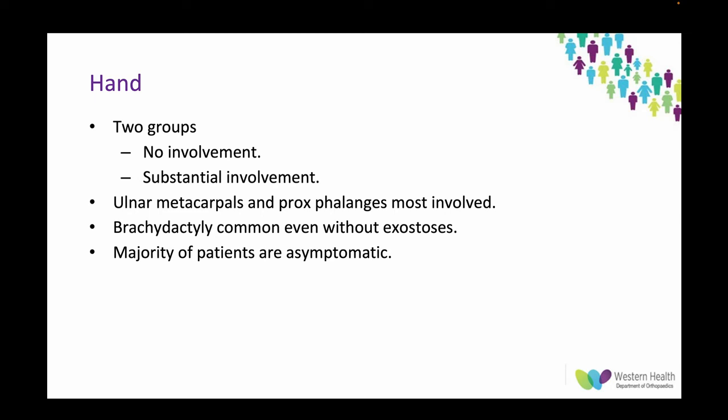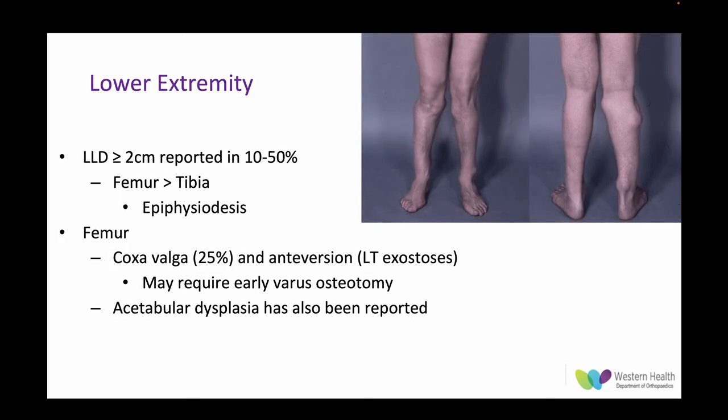In the hand, ulnar metacarpals and proximal phalanges tend to be involved, usually asymptomatic. Brachydactyly is common even without exostosis on x-ray. For the lower extremity, a limb length discrepancy of more than 2 cm is reported in up to 50% of patients, typically more so in the femur than the tibia. Treatment follows standard limb length discrepancy principles based on projected final difference at skeletal maturity — usually these patients are caught early enough to be managed with epiphysiodesis.